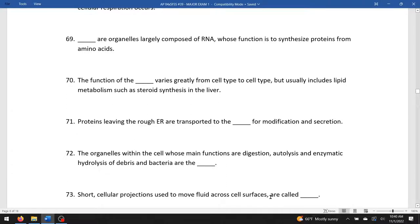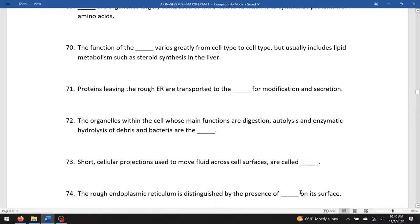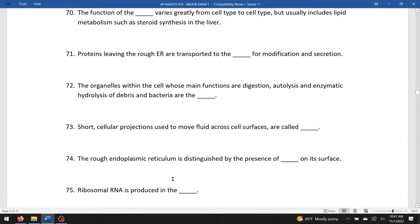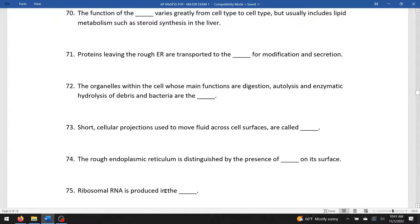Short cellular projections used to move fluid or particles across the surface are called cilia. The rough endoplasmic reticulum is distinguished by the presence of ribosomes. It's studded or peppered with ribosomes. Ribosomal RNA is produced in the nucleolus.